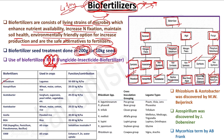Rhizobium mostly works in legumes and can fix 50 to 300 kg of nitrogen per hectare, depending on the cross-inoculation group and species of legume. Azospirillum is mostly used in wheat, maize, cotton, and rice and can fix 20 to 25 kg nitrogen per hectare. Acetobacter is associated with sorghum, sugarcane, pearl millet, and vegetables and can also fix 20 to 25 kg nitrogen per hectare. Azolla is used in flooded rice and can fix 30 to 40 kg nitrogen per hectare. Blue Green Algae (BGA) in rice can fix 20 to 30 kg nitrogen per hectare.